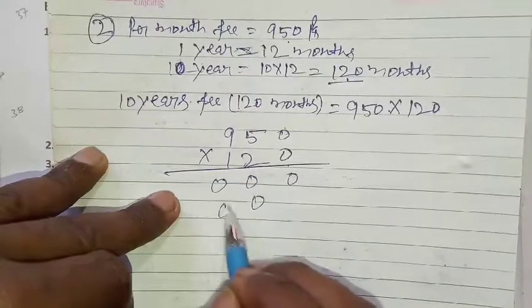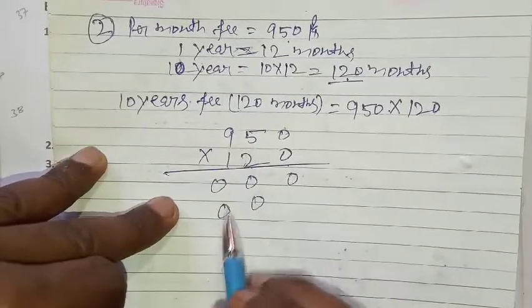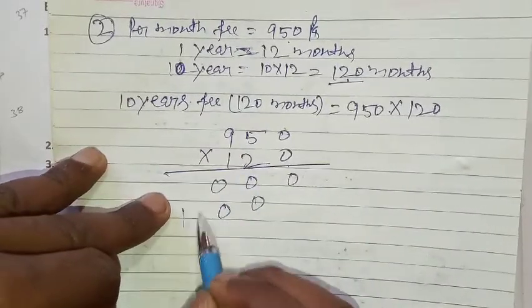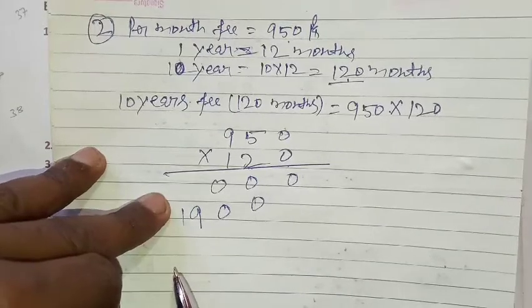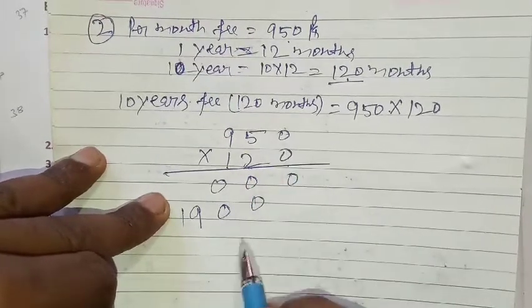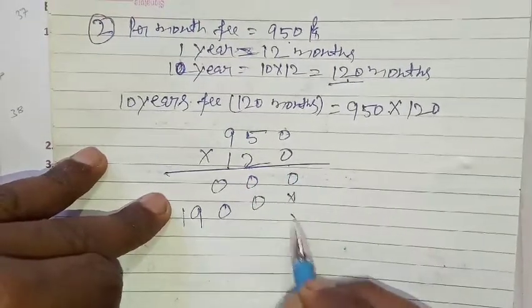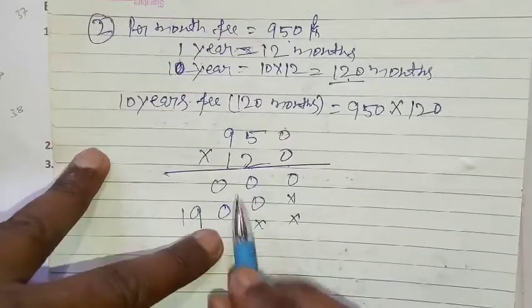When we multiply any number by 0, we get zero. 2 into 0, 2 into 5 is 10, 2 into 9, 18, and 19. Now, 1. See, here one is left. In the 2nd place, leave a gap. 1, 0, 0.